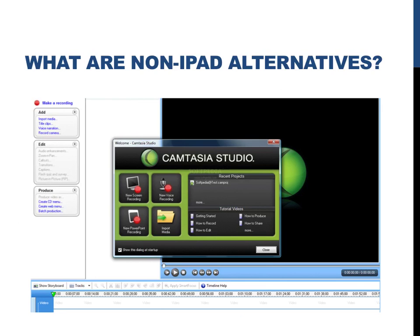For the features that I need for screencasting, Explain Everything works really well. If you want lots of features and you're willing to fork over more money, Camtasia is an excellent alternative for PCs or Macs. The problem is it can cost hundreds of dollars, but if you're interested, you can download a free trial for one month.